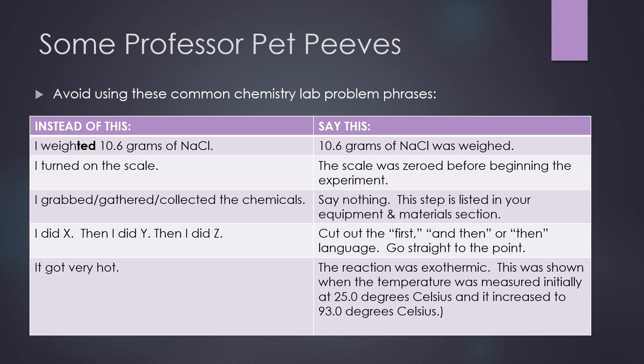Next, you don't want to tell your reader that you grabbed or gathered or collected chemicals. These kinds of details are both too colloquial, meaning too chatty, and they're also too repetitive. Instead, say nothing. This step of gathering your chemicals and your materials is listed in your equipment and materials section and it doesn't need to be repeated.